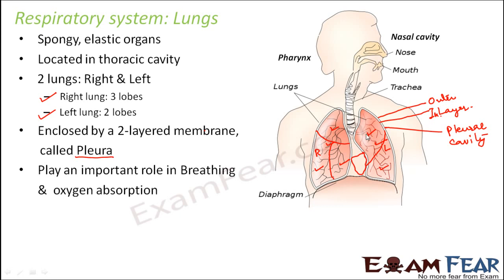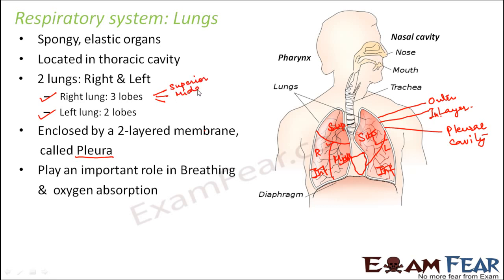The lobes of the lungs are named by position. In the left lung, the upper lobe is called the superior lobe and the lower one is the inferior lobe. In the right lung, there are three lobes: the superior lobe at the top, the inferior lobe at the bottom, and the middle lobe in between.